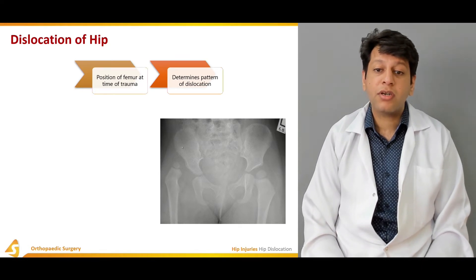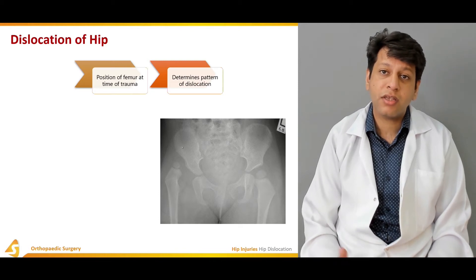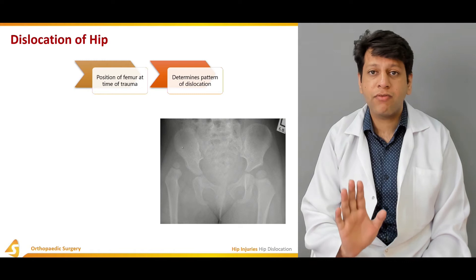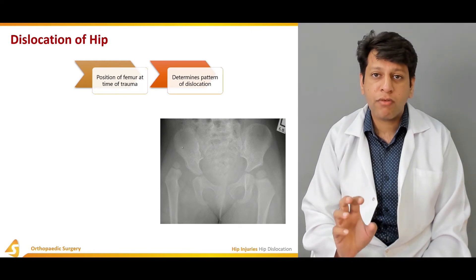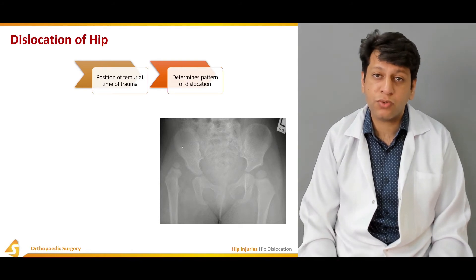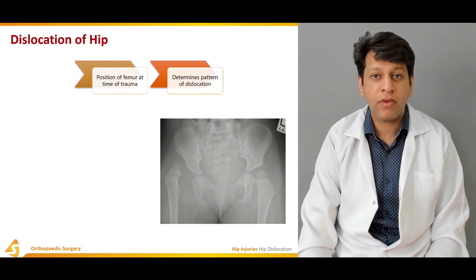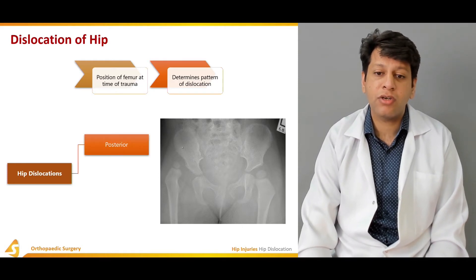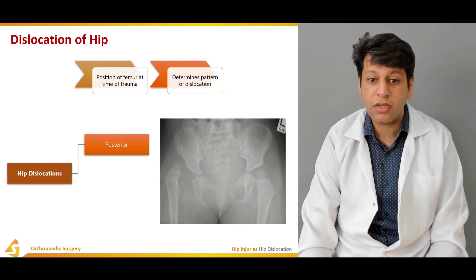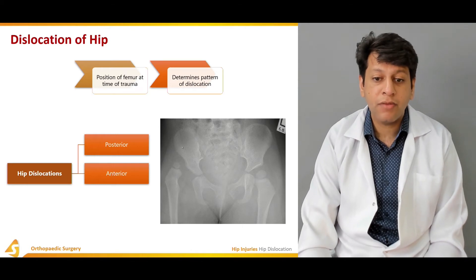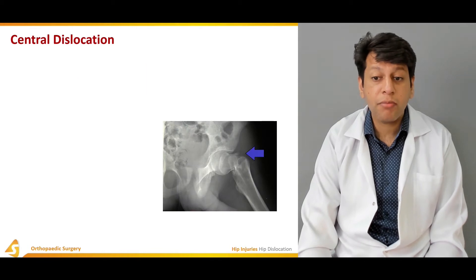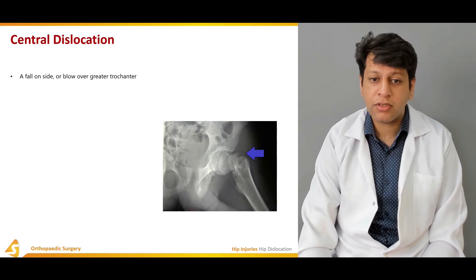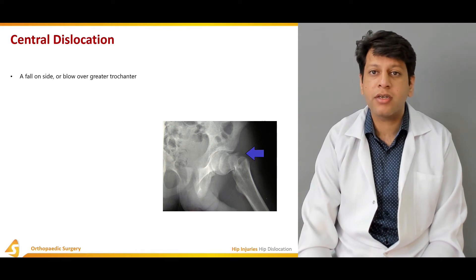There is also a rare type called central dislocation. If a person was sitting in a car and there was a side crash, the force from the greater trochanter could push the femoral head medially into the acetabulum. Central dislocation is highly rare and almost always associated with acetabular fractures and femoral head fractures. A fall on the side or a blow over the greater trochanter can result in this central dislocation.